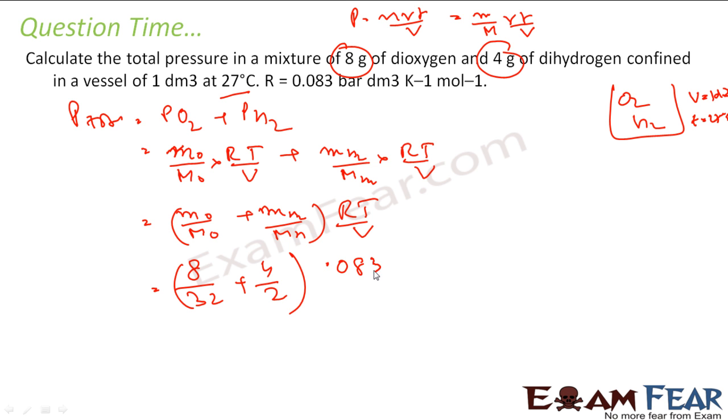So we will put the value 0.083. Why this one? Because this is given and for this my temperature has to be in Kelvin. So 27 degrees Celsius is nothing but 27 plus 273 Kelvin, that is 300 Kelvin. So this will be in Kelvin by V. V has to be in dm cube and the V is given 1 dm cube.